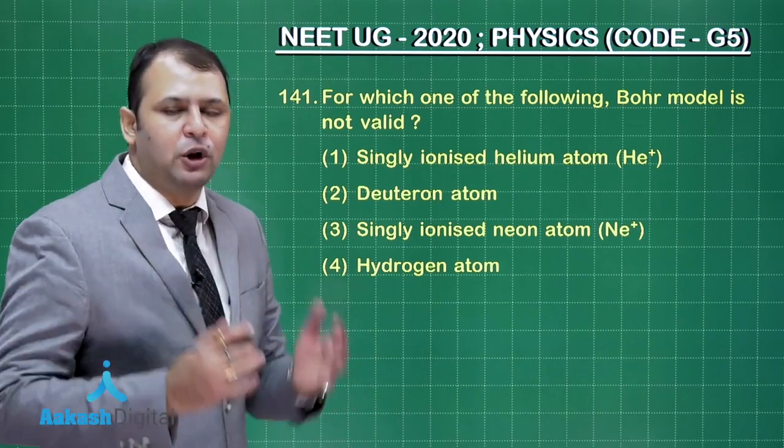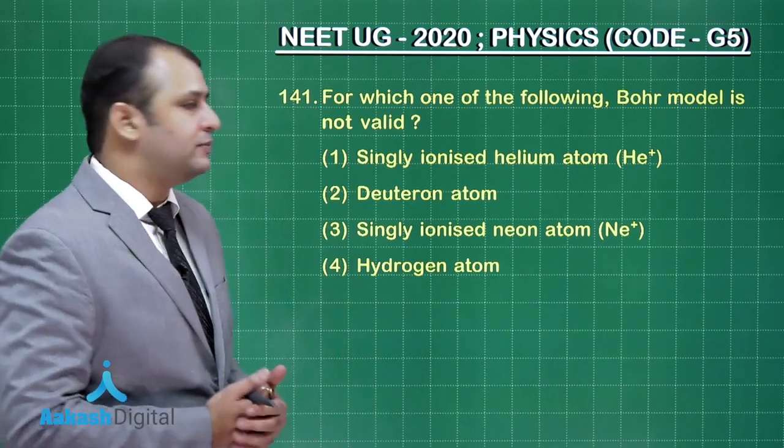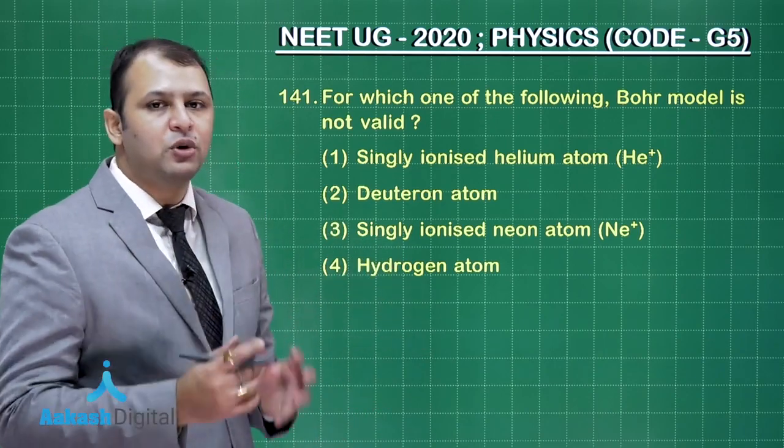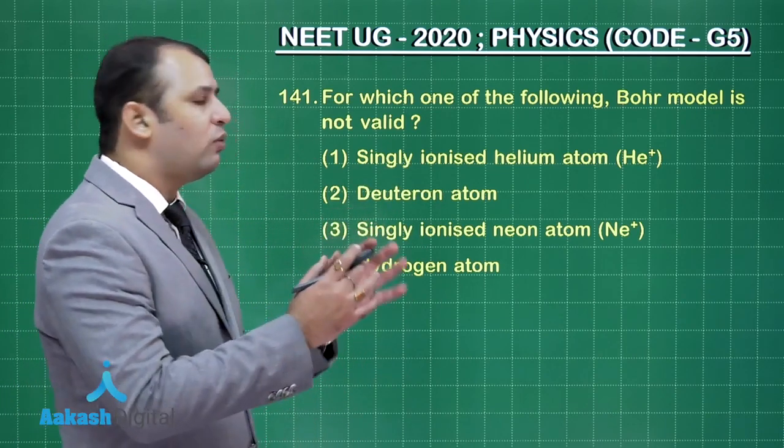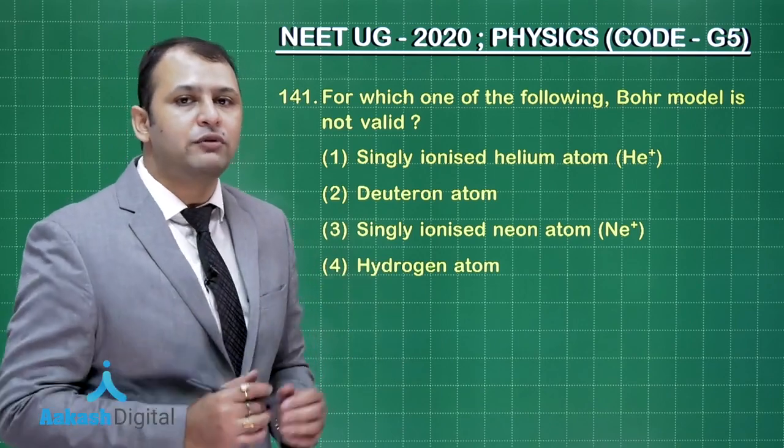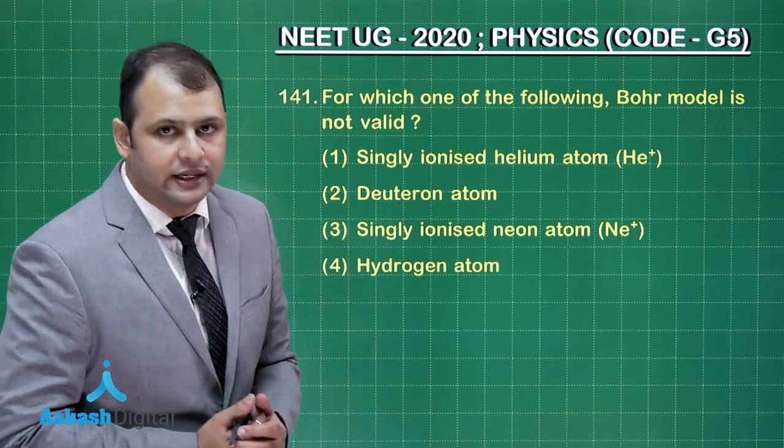Now this question number 141 belongs to chapter atoms from class 12. Here the question is based on the Bohr's atomic model. As per the question, for which one of the following Bohr model is not valid. So Bohr model is valid only for hydrogen and hydrogen like atoms. Right.